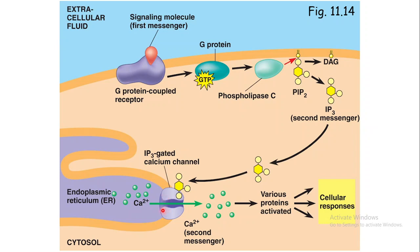Because the endoplasmic reticulum serves as a store for calcium inside the cell, the calcium concentration there is high. Once the calcium ion channel opens due to ligand binding, calcium moves from the endoplasmic reticulum into the cytoplasm, activating various proteins and producing a cellular response. This is a great example of a ligand being responsible for opening a calcium channel.